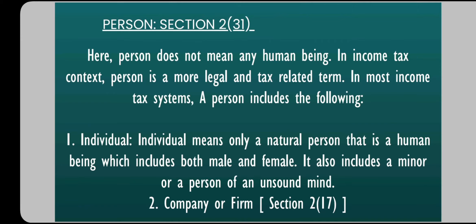Next, included in 'person' under Section 2(31) is any company or any firm, as described in Section 2(17). When we talk about a company, remember that a company can be a foreign company or an Indian company. It can be a domestic company — Indian company under Section 2(26) — or a foreign company under Section 2(23). There are many conditions in the category of company, but definitely a company is also included as a person — one who is subject to pay taxes.